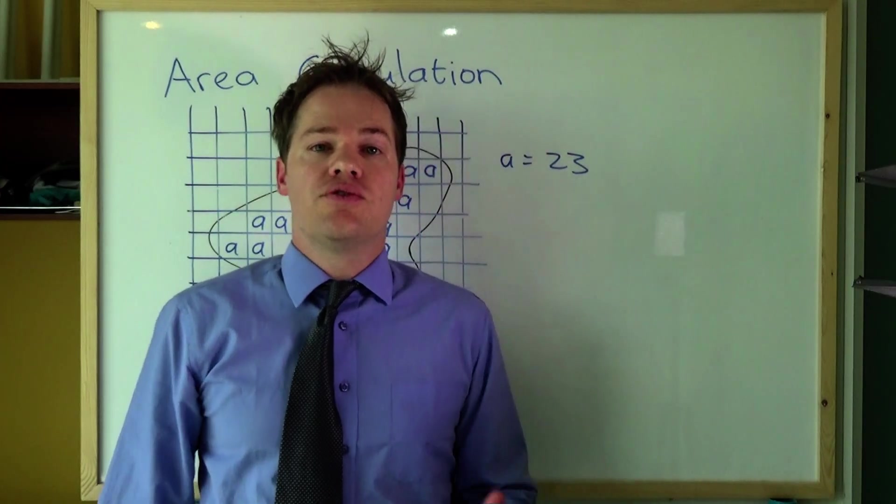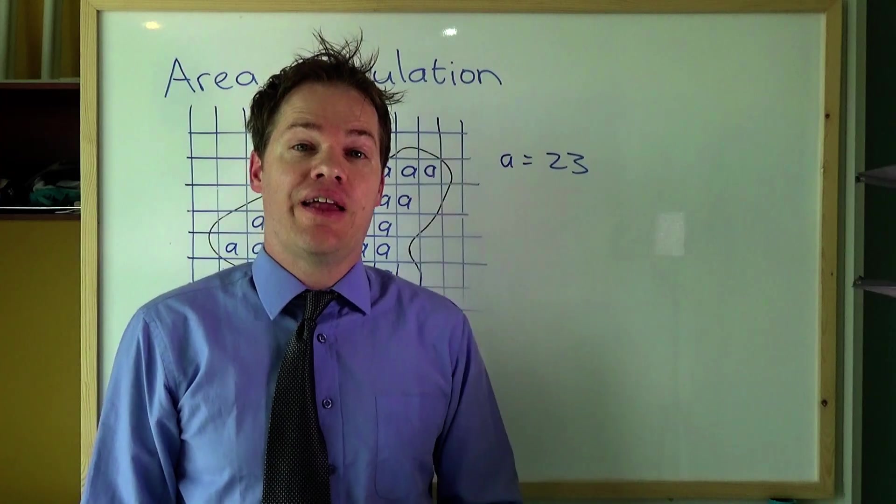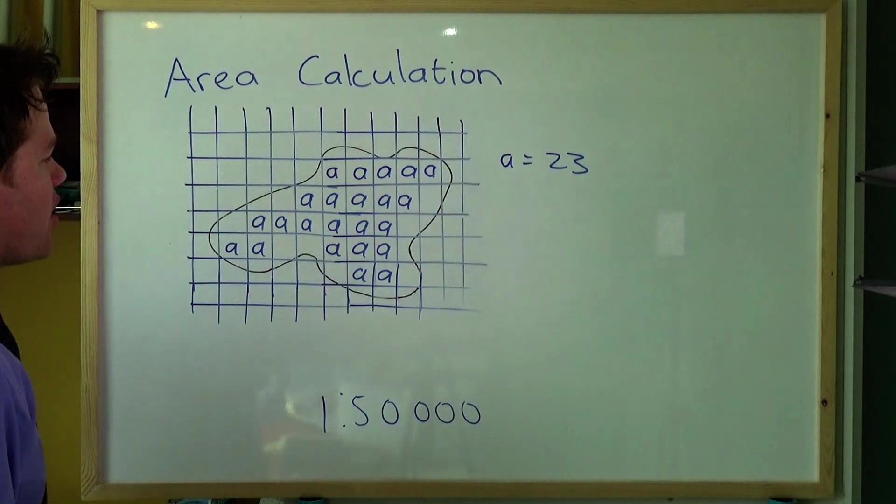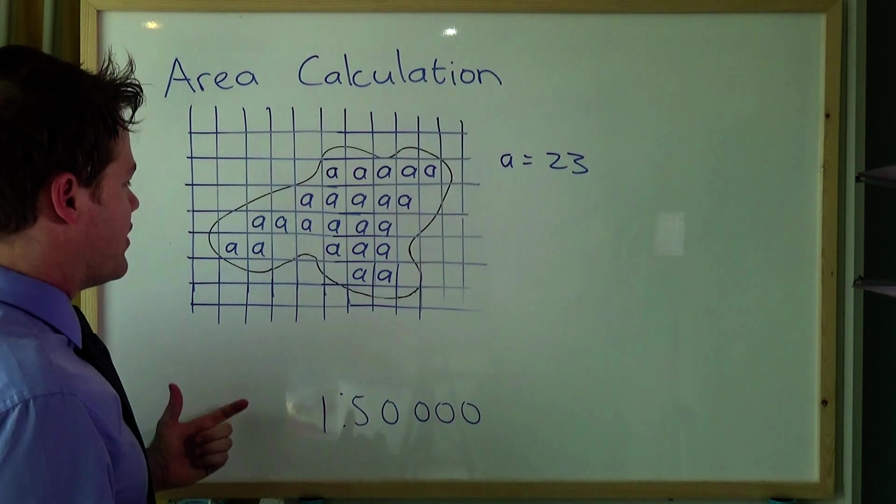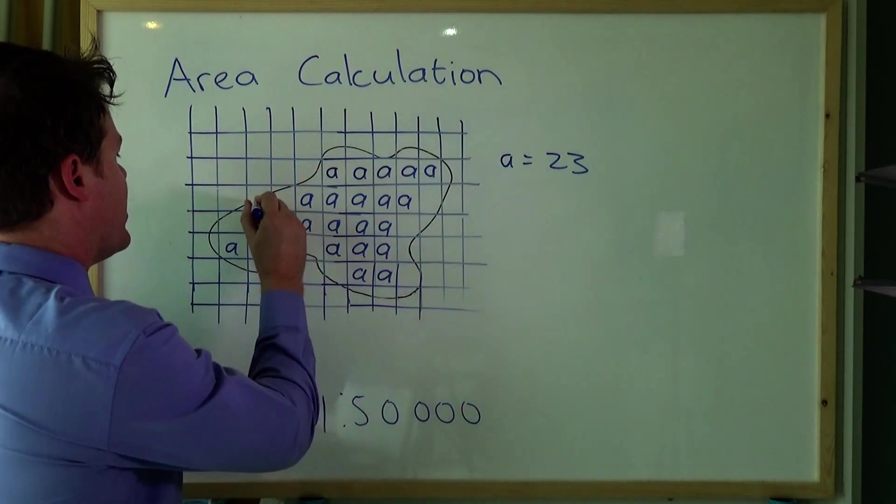Right now that you've counted these squares, now you're going to go and look for all the half squares and write the letter B in each one of those squares. Obviously you can't say exactly what is half and what is not so you are just going to sort of guess more or less.